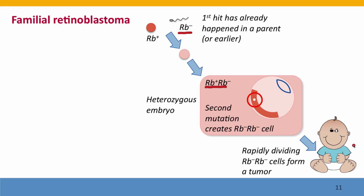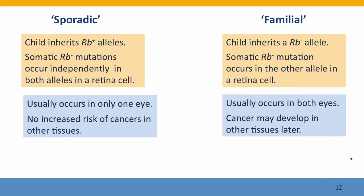Because the mutant cells grow rapidly, usually the tumor becomes evident during the first year or two of the child's life. With sporadic retinoblastoma, the tumor usually develops in only one eye. This makes sense because it's only going to happen in those rare individuals where two RB mutations have occurred in the same cell lineage — very unlikely to occur in both eyes of a person with a normal genotype.